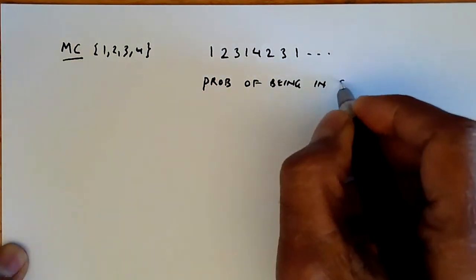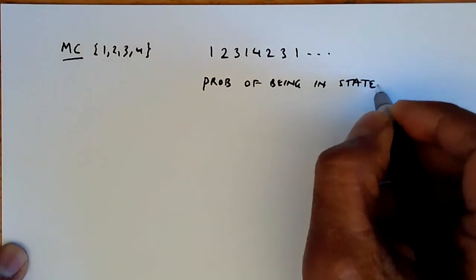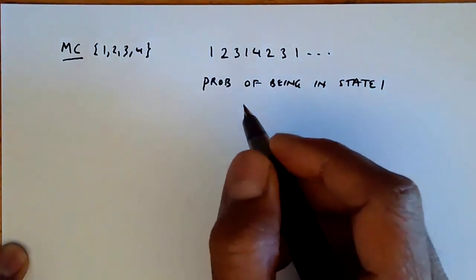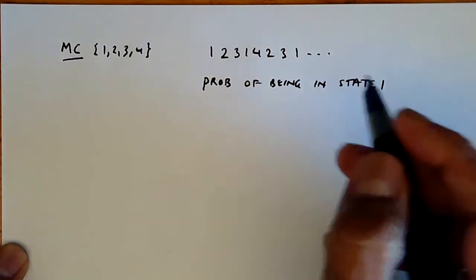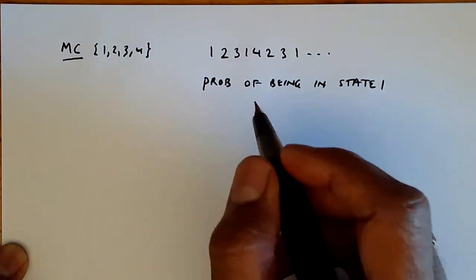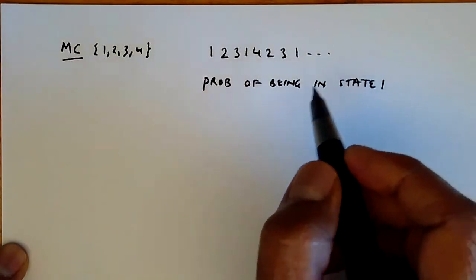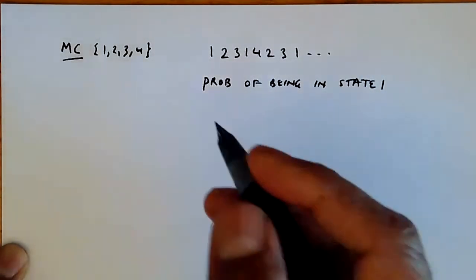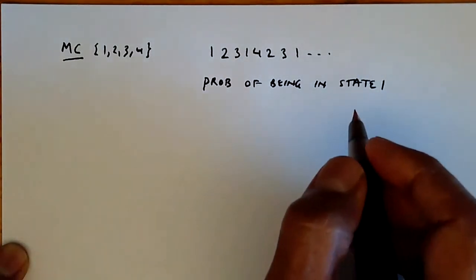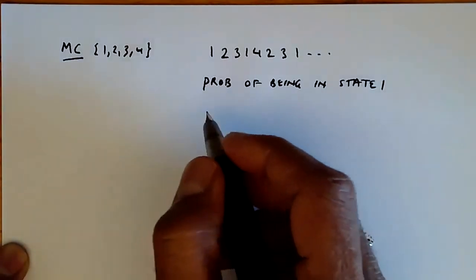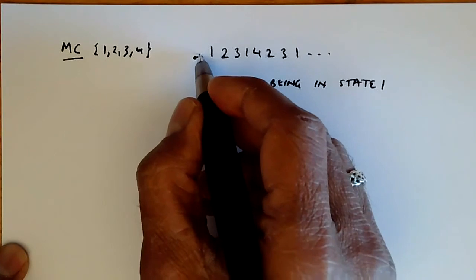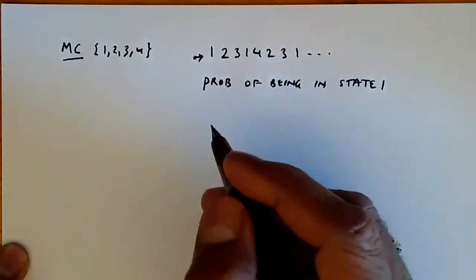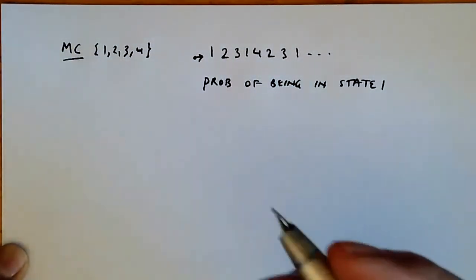And this probability can be evaluated as the limit of the fraction of ones in the string. So we have a long string, and we take the limiting value of the number of ones to the length of the string, and as this limit increases, we can view that as being the probability of being in state one.